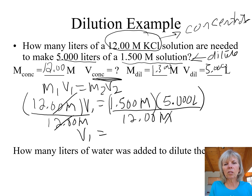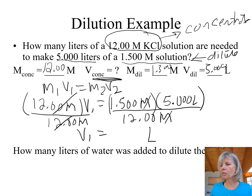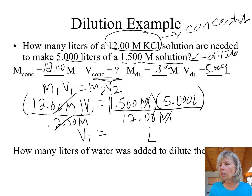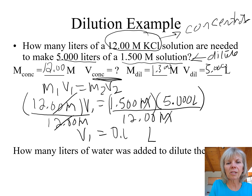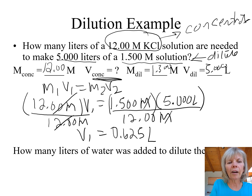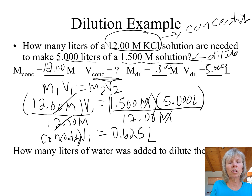We can cancel out our molarity units, leaving us with liters, which is a volume unit — so that makes sense. When we do the math, 1.5 times 5 divided by 12 gives us 0.625 liters. That is the volume of the concentrated solution that we'll be adding water to.